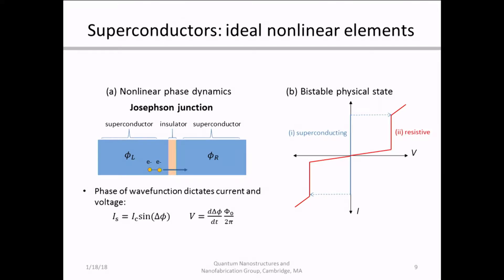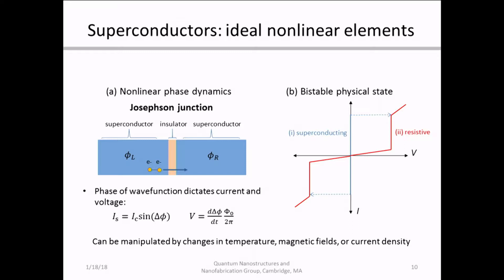Conversely, we can think about this in more of a macroscopic sense. We can consider a superconductor as a bistable physical system. Here I've shown the current and voltage characteristics of a device. You can see that the superconductor switches between two states: the superconducting state and the resistive state. In the superconducting state, you can run current through the device without any voltage forming. However, once you surpass a certain critical parameter, you jump abruptly into the resistive state and form a voltage. All of this switching can be manipulated by changes in temperature, magnetic fields, or current density — the three critical parameters you can use to tune a superconductor. As a result, these are great models for studying how nonlinearity can be modulated by external variables.